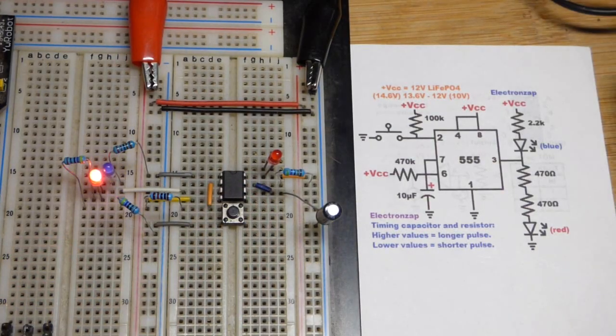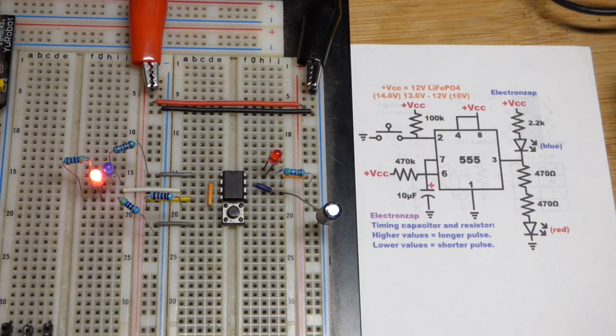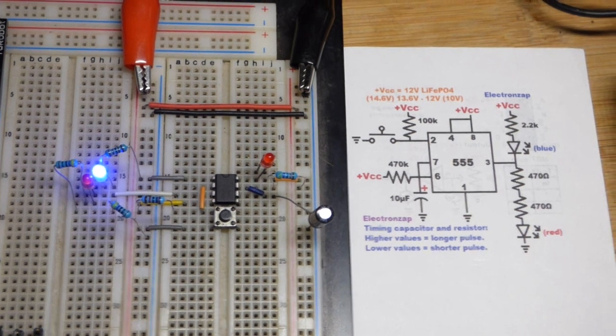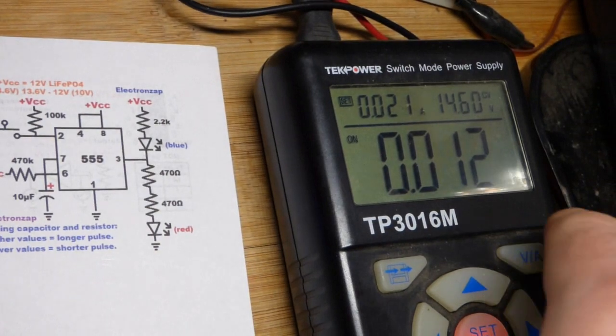In this video we're going to look at a monostable mode 555 timer again. I've done a number of videos on these, but this time we have the voltages set up where it can be lithium-ion phosphate battery range voltages.